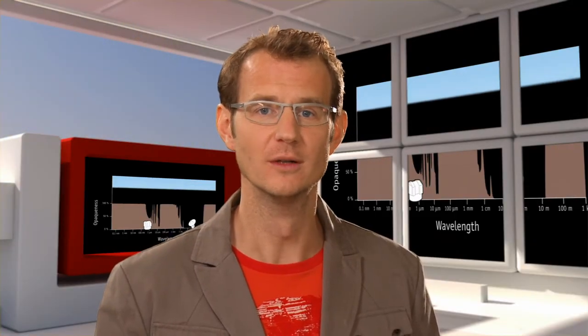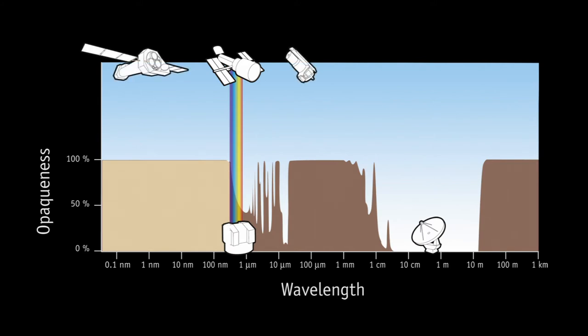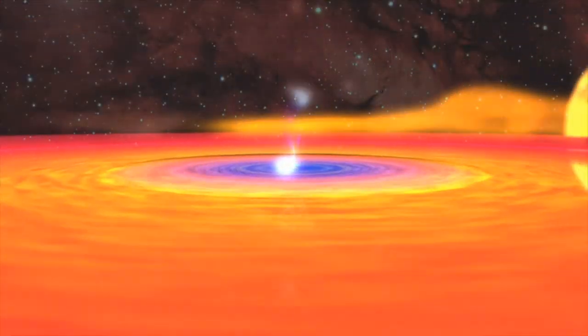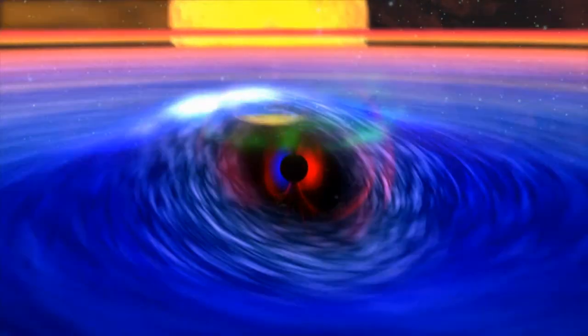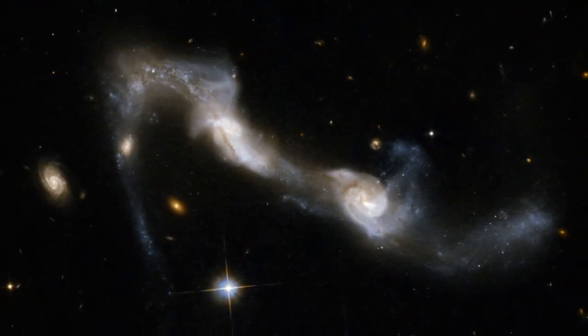So what about X-rays and gamma rays? Well, they are completely blocked by the Earth's atmosphere. And so, without space telescopes, astronomers would be totally blind to these energetic forms of radiation. X-ray and gamma ray space telescopes reveal the hot, energetic and violent universe of galaxy clusters, black holes, supernova explosions and galaxy collisions.